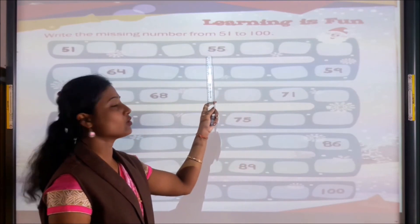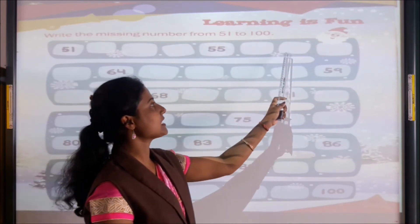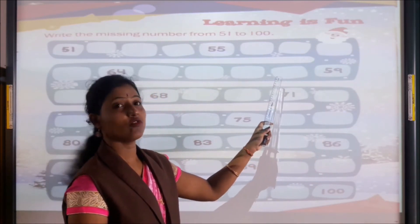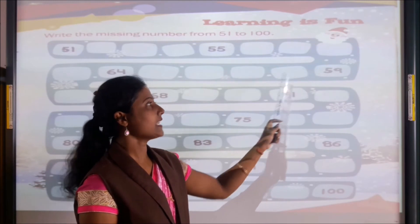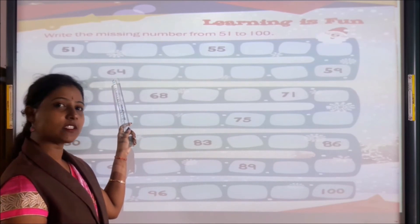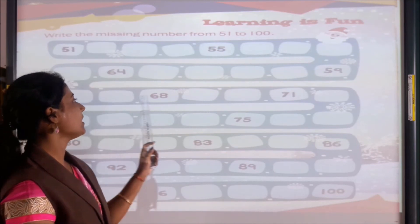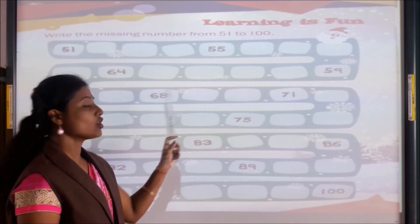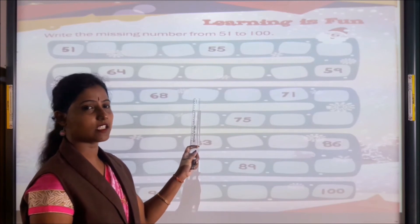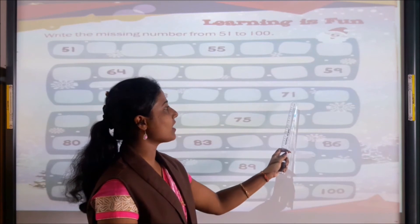You don't have to write 55 again. You will write the next number: 56, 57, 58. Then 59 is written here, so you will write what comes next. After 59 comes 60, 61, 62, 63. Then 64 is written here, so you will write 65, 66, 67. Then 68 is written here, so you write the next number: 69, 70. Then 71 is written here.